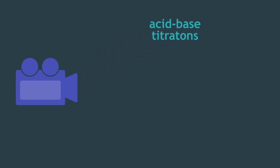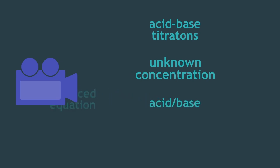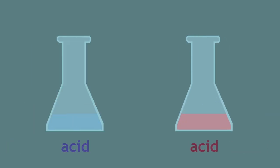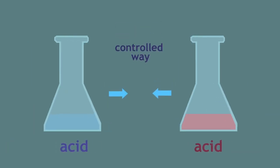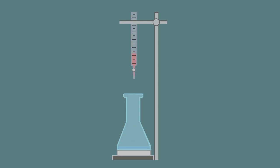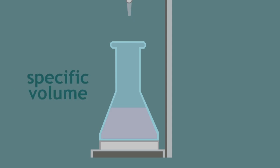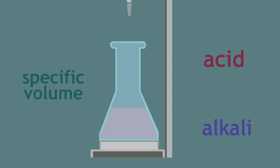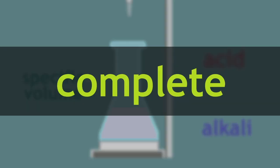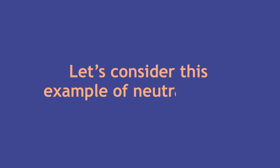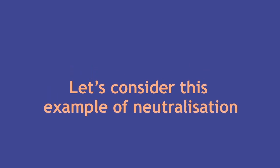In this video we are going to learn about acid-base titrations and how to calculate an unknown concentration for either an acid or base. Given the balanced equation, you can react an acid and alkali together in a controlled way by adding one to its opposite using a burette until neutralization is achieved. This process is called titration. Once an indicator changes color at a specific volume, you have reached the end point and the titration is complete.